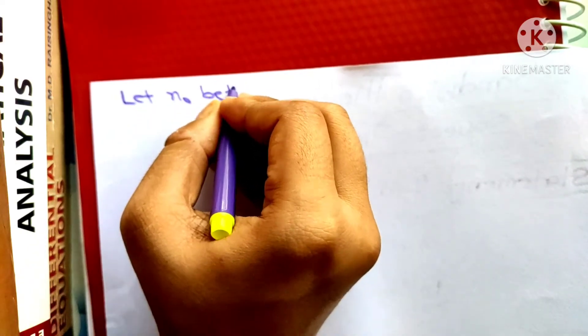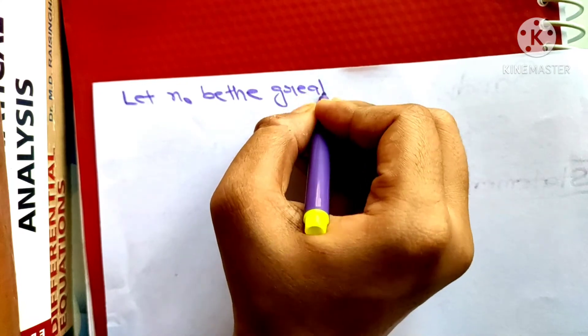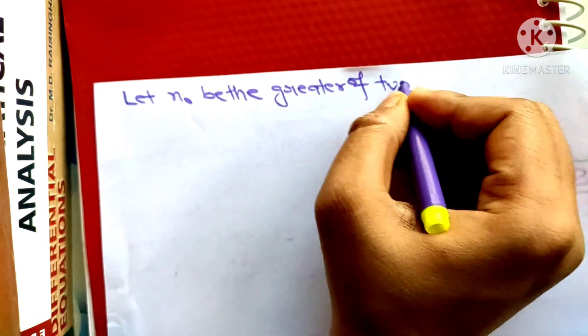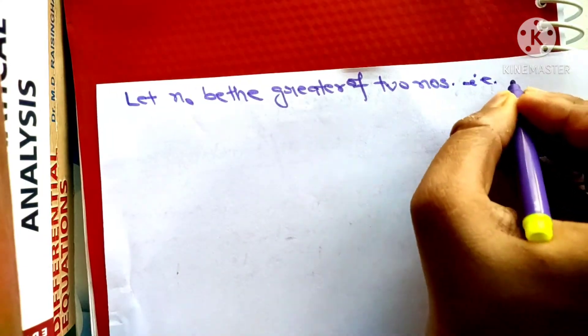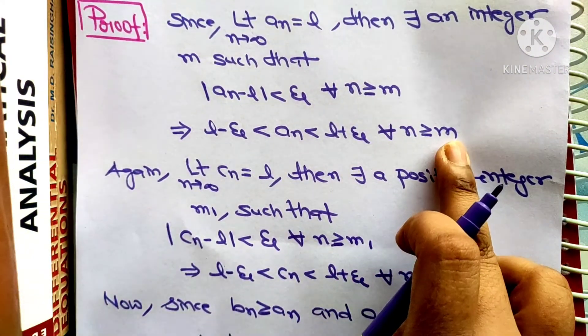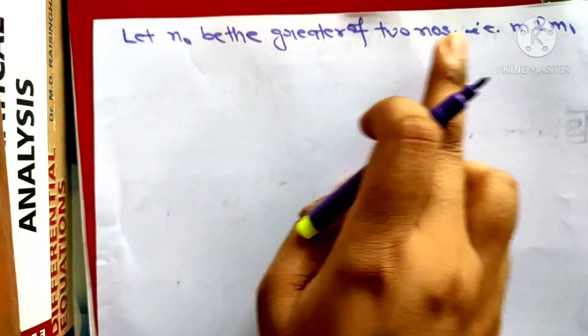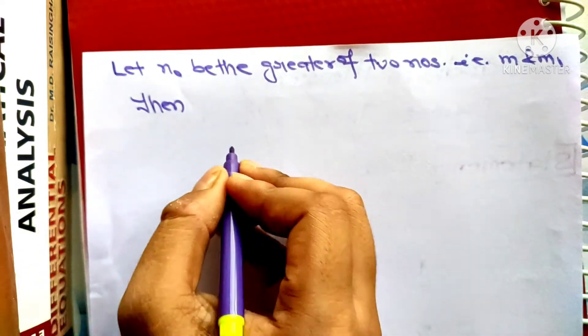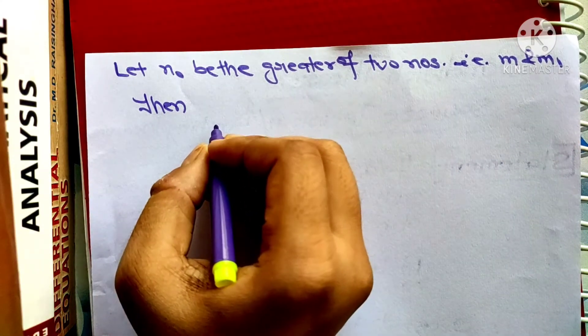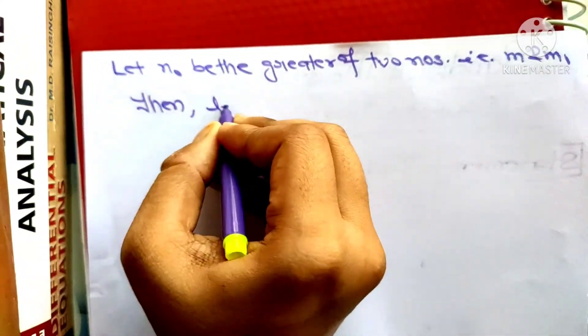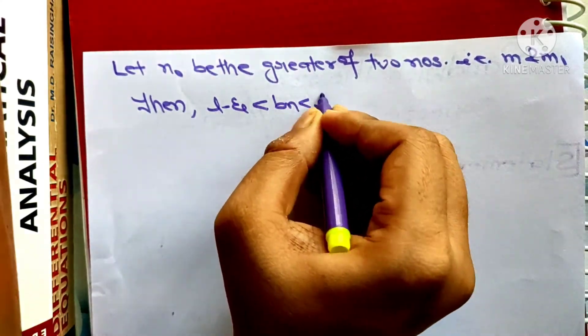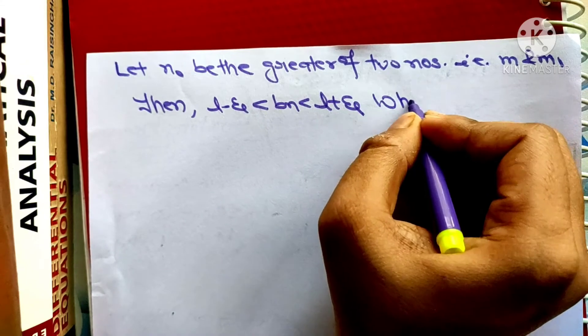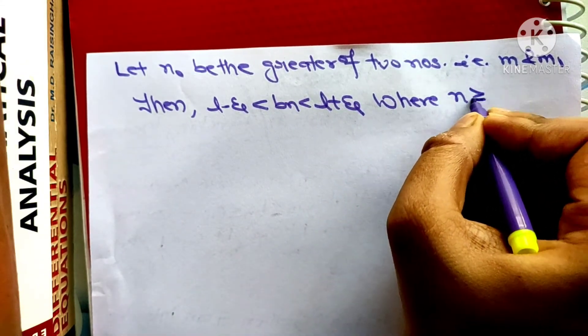Let n₀ be the greater of the two numbers m and m₁. Since n₀ is greater than both m and m₁, combining both inequalities we get: l − ε < bₙ < l + ε for all n ≥ n₀.